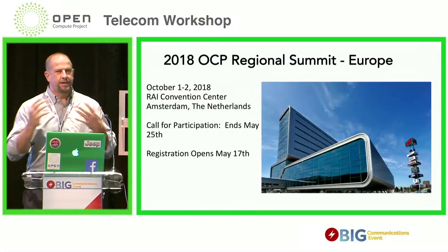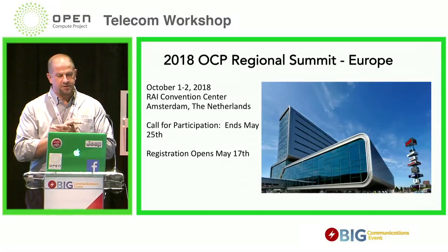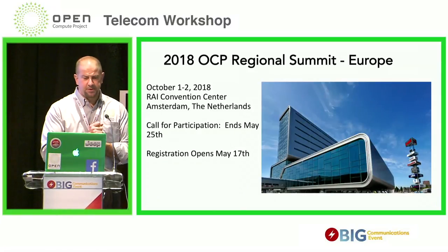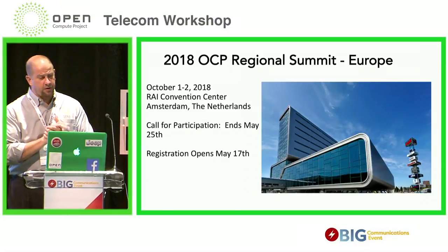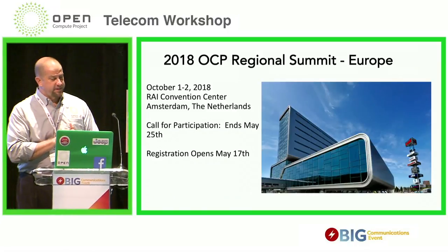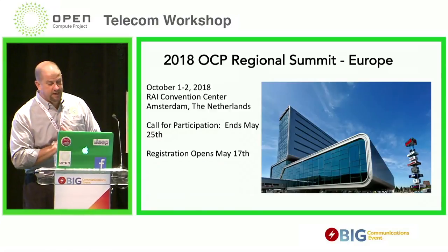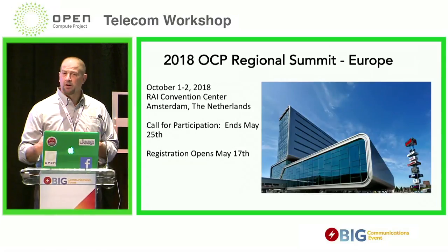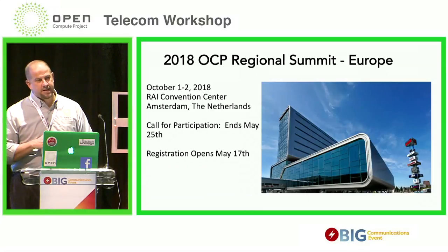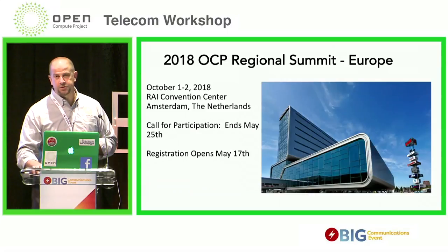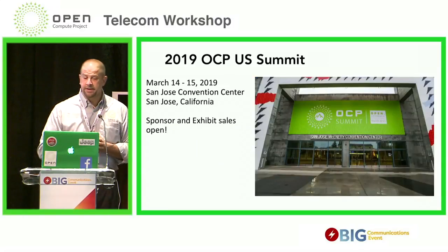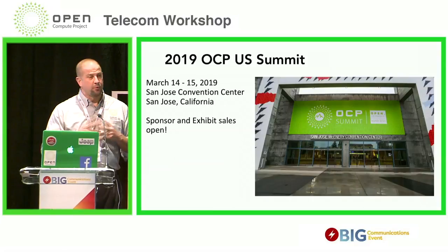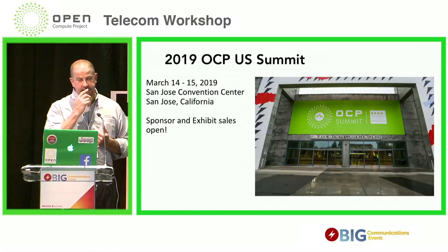I just want to let you know about the next biggest events we have coming up. We've got our first annual regional summit in Amsterdam, October 1st and 2nd. Our call for participation has already started and ends May 25th. Registration opens May 17th, and we've already started selling sponsorships and exhibit space. It's going to be about a third the size of our annual summit. We also want to remind you about our annual summit, March 14th and 15th, 2019, back in San Jose - sponsor and exhibit sales are open as well.